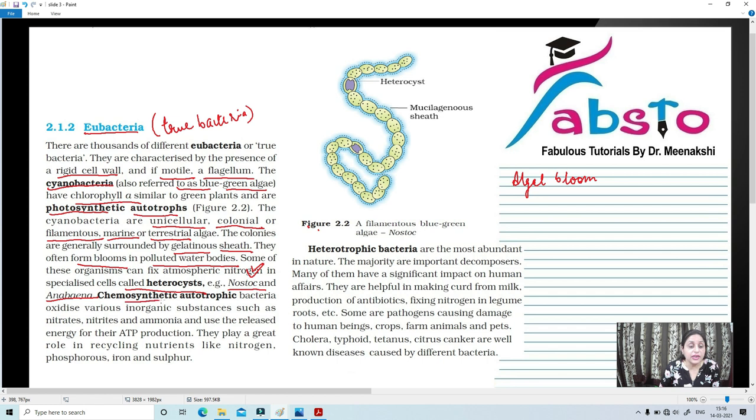Again, we are going to talk about chemosynthetic autotrophic bacteria. We have already talked about photosynthetic autotrophs. Now we are going to talk about chemosynthetic autotrophs, those which use the chemical energy of the bonds to prepare their food. And they utilize or oxidize various inorganic substances such as nitrates, nitrites and ammonia and use the released energy for their ATP production. ATP is adenosine triphosphate which is the energy currency of the cell. They also play a great role in recycling nutrients like nitrogen, phosphorus, iron and sulfur. So this is the economic importance of cyanobacteria.